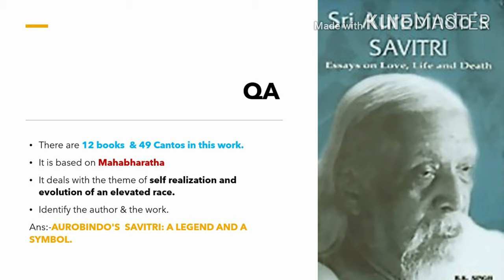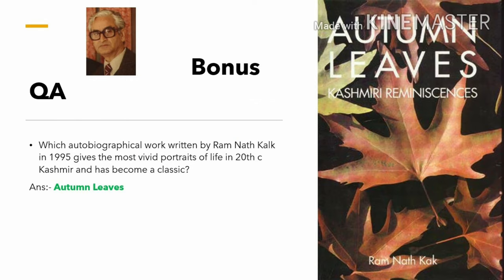Aurobindo's works were published by Sri Aurobindo Ashram in 1997 in 37 volumes. His main literary works include The Life Divine, Savitri: A Legend and a Symbol, Synthesis of Yoga, and Hymns to the Mystic Fire. Bonus question: which autobiographical work written by Ramnad Kak in 1995 gives the most vivid portraits of life in 20th century Kashmir and has become a classic? The answer is Autumn Leaves.